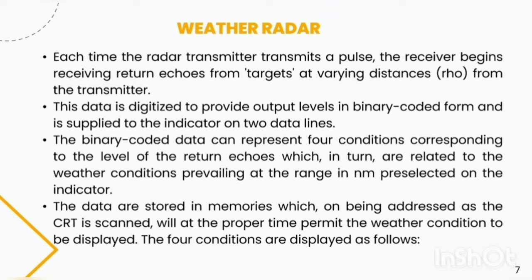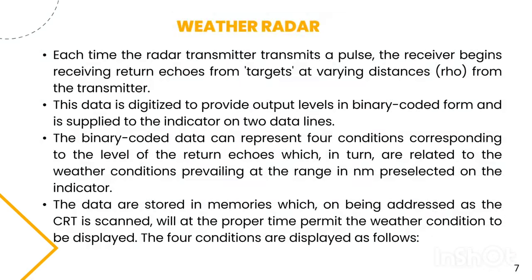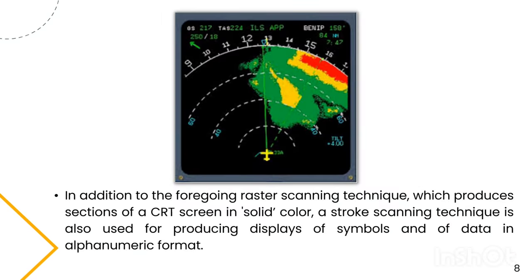The four conditions are displayed as follows. In addition to the raster scanning technique which produces sections of a CRT screen in solid color, a stroke scanning technique is also used for producing displays of symbols and data in alphanumeric format.